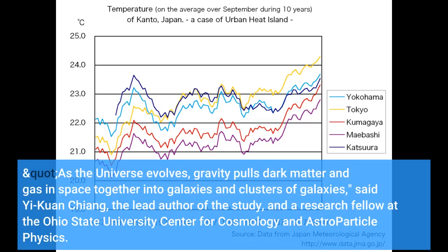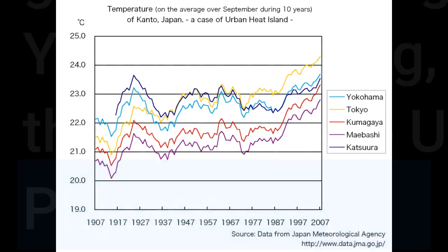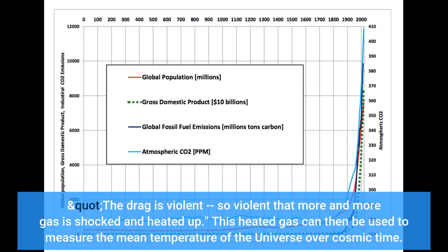As the universe evolves, gravity pulls dark matter and gas in space together into galaxies and clusters of galaxies, said Yi-Kuan Chang, the lead author of the study and a research fellow at the Ohio State University Center for Cosmology and Astro-Particle Physics. The drag is violent — so violent that more and more gas is shot and heated up. This heated gas can then be used to measure the mean temperature of the universe over cosmic time.